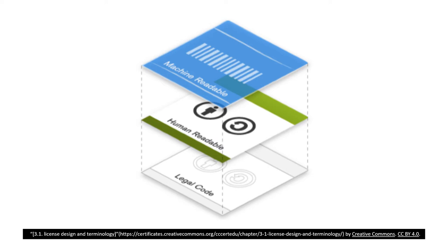But do you know that there are another three levels in the design of every single CC license? Each of these six CC licenses has been designed with three layers: one, two, three. The first layer is called the legal code layer, which contains lawyer-readable terms and conditions.